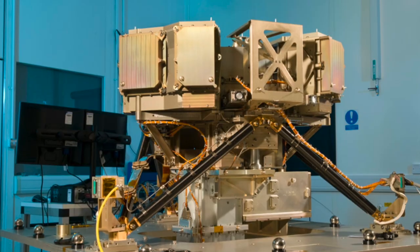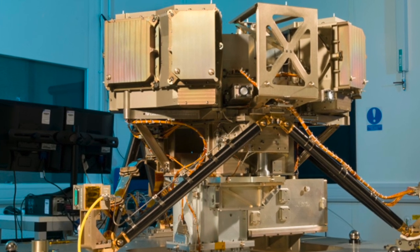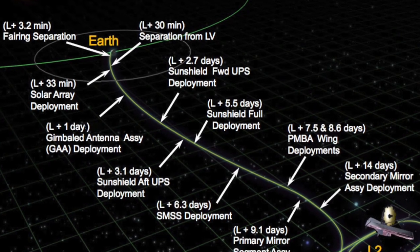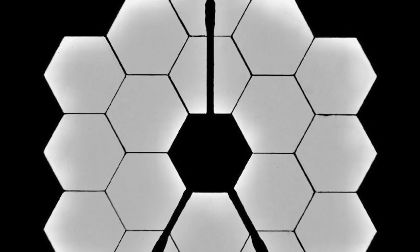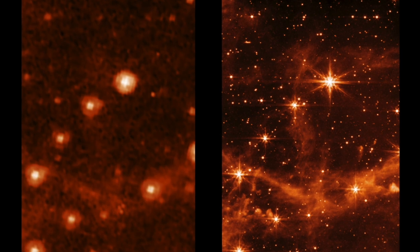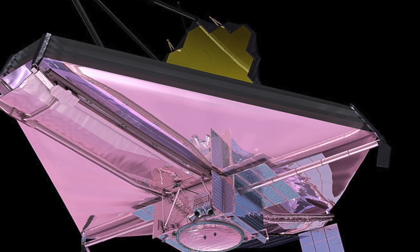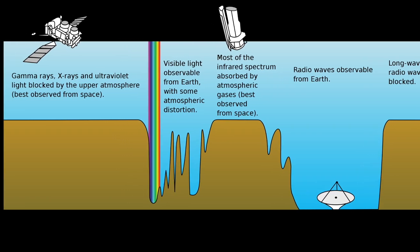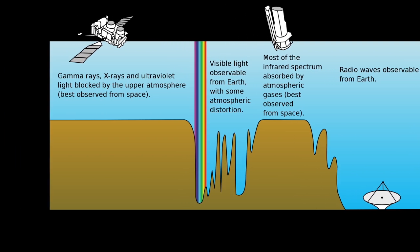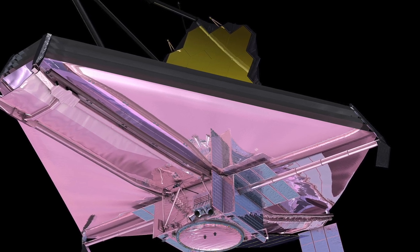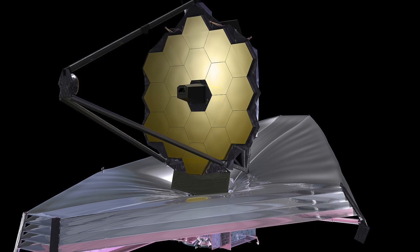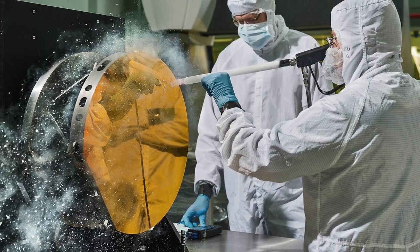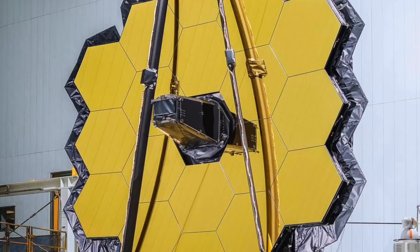The launch was delayed several times, first to May 2020, then to March 2021, due to issues with the sunshield and deployment procedures. In August 2019, mechanical integration of the telescope was completed. After final tests, the telescope was transported to French Guiana in October 2021 for launch preparations. NASA's lifetime cost for the James Webb Space Telescope is expected to be approximately US$9.7 billion, with US$8.8 billion spent on spacecraft design and development and US$861 million allocated for five years of mission operations. The European Space Agency and Canadian Space Agency contributed approximately US$700 million and US$200 million, respectively, to the project.